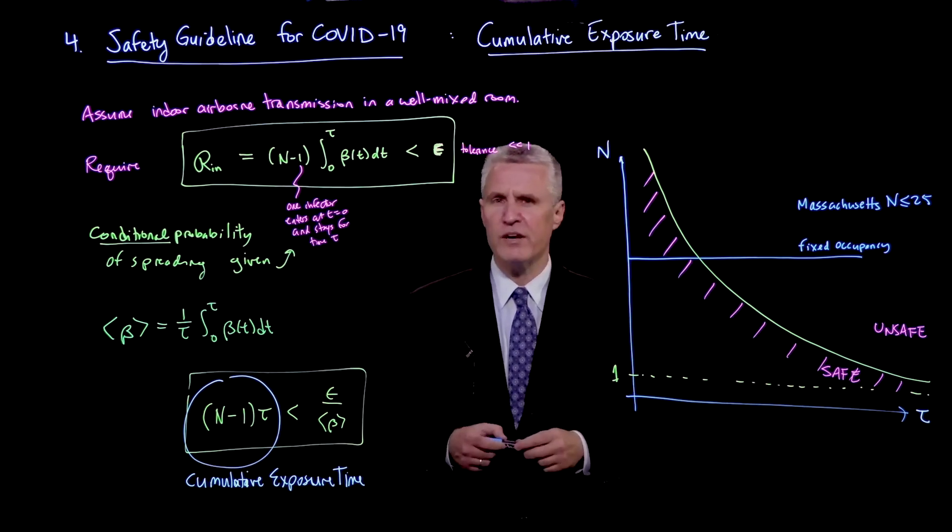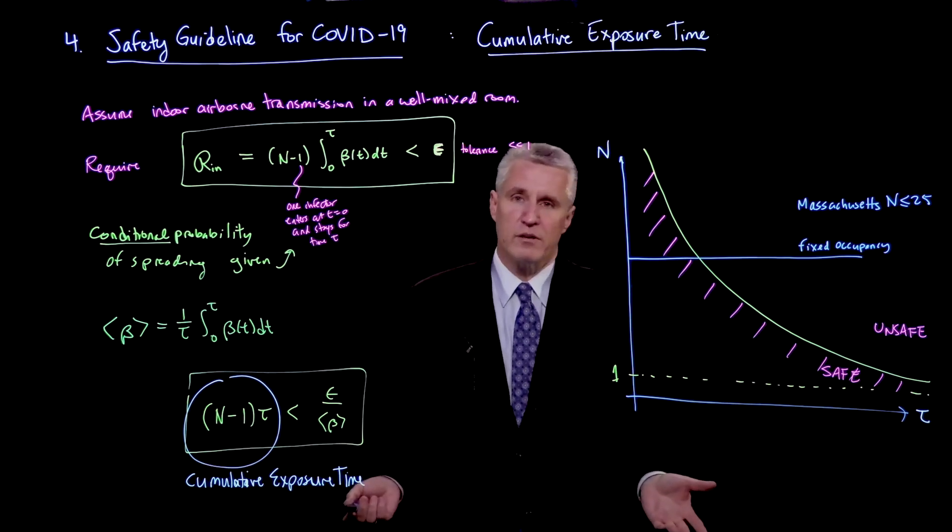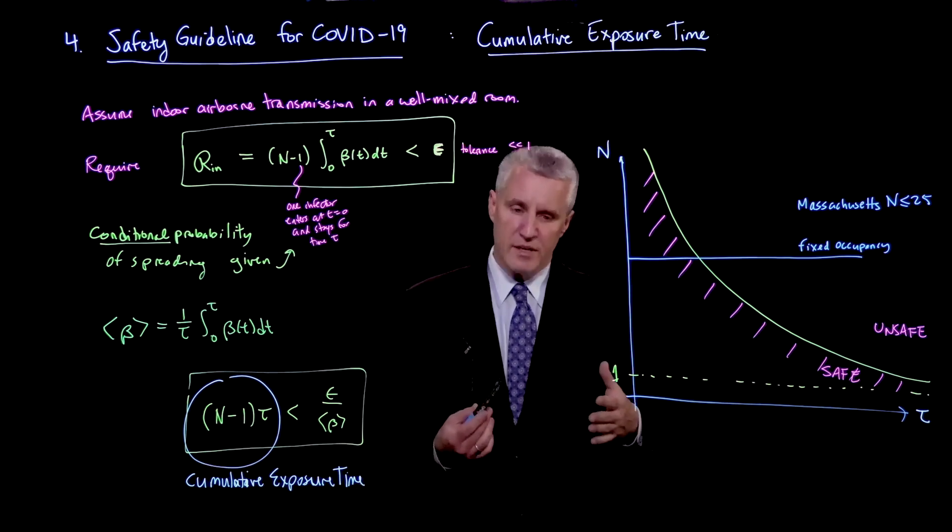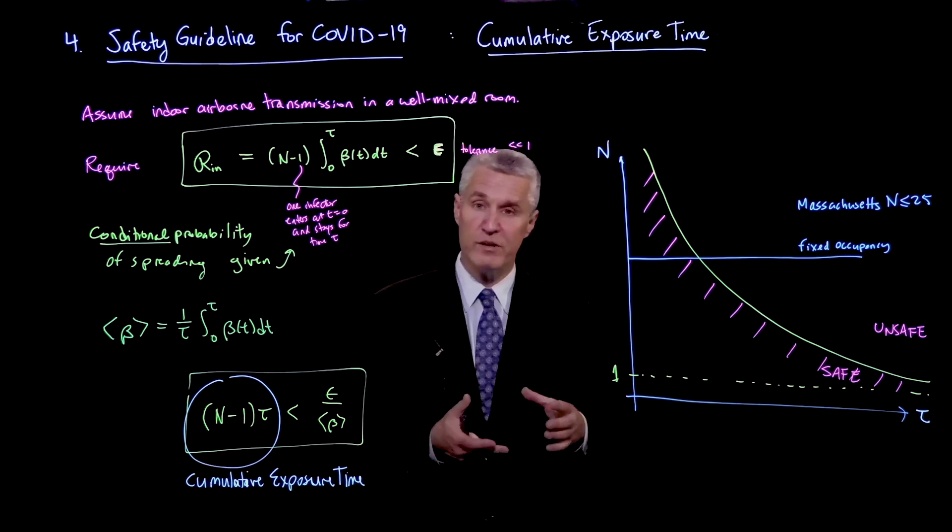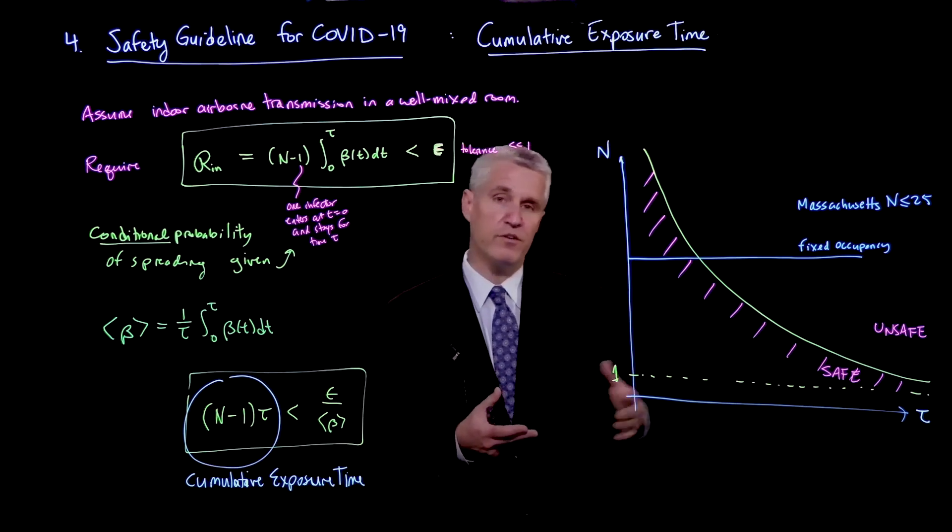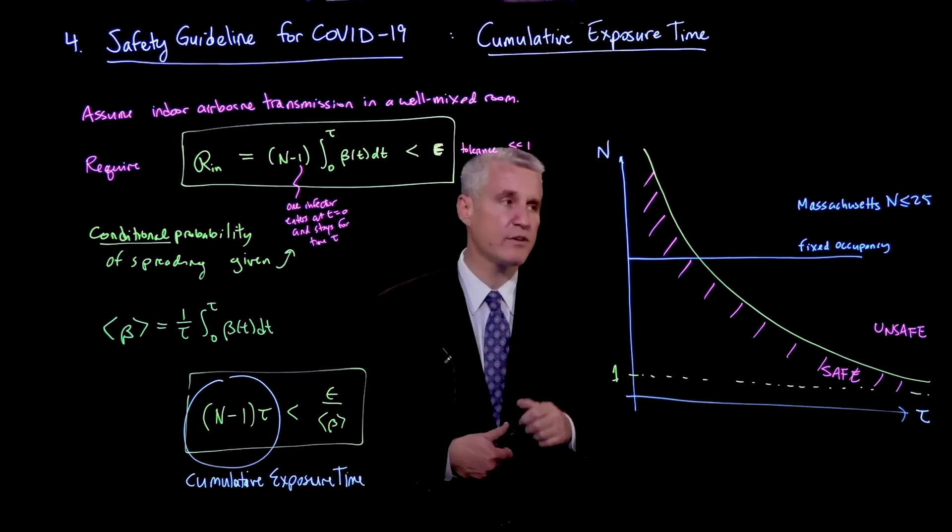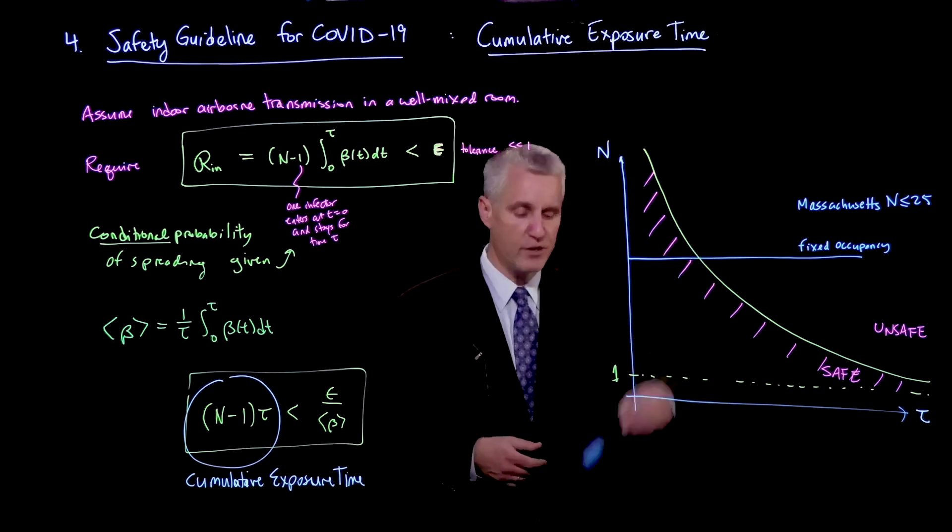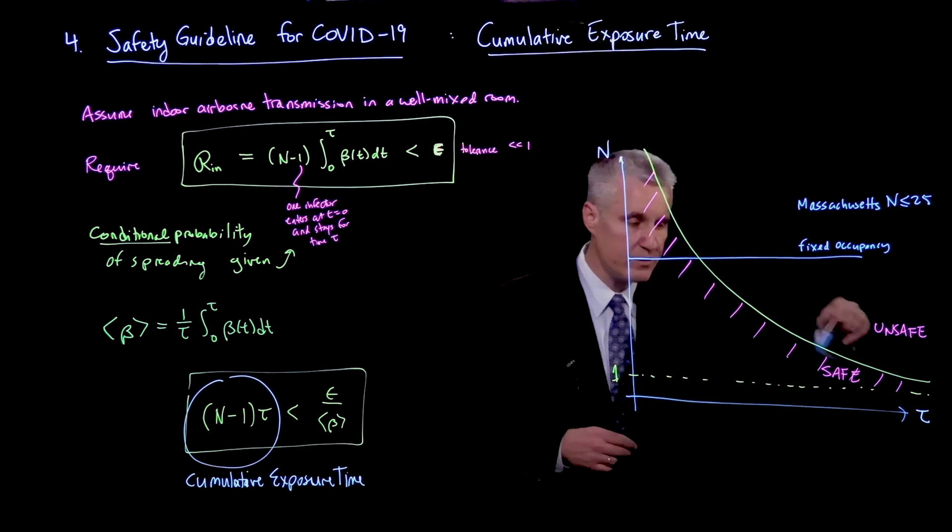The problem with that rule is it doesn't take into account time. What if my class is only five minutes long? Or let's say it's one hour long. In that time, if I don't have an expectation of transmission, I should be OK. On the other hand, if those 20 people sit in the classroom for several weeks, it's pretty likely that if an infected person is among them, there will be a transmission. So time has to come in. And that you see very clearly here from the crossing of the fixed occupancy with the safety guideline.